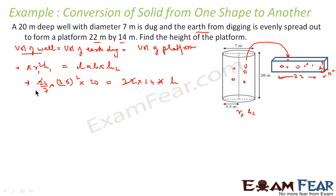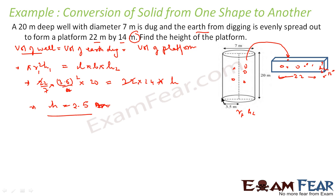If you cancel and simplify — 3.5 is 35/10 — solving this gives h2 equal to 2.5 meters. So the height of the platform is 2.5 meters. If you take out the mud from digging this well and spread it to form a platform of 22 m × 14 m, the height of the platform will be 2.5 meters.